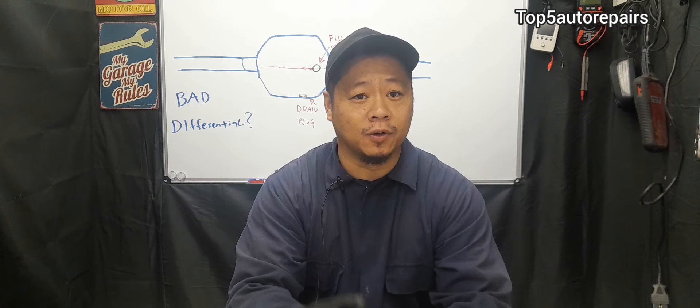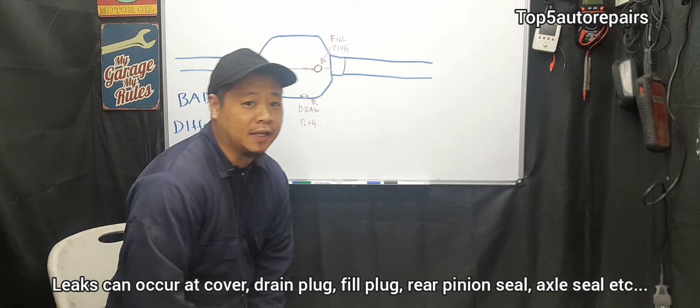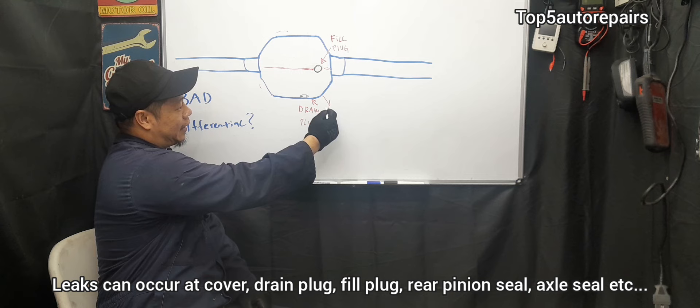The next common reason why your differential fails is going to be leaks. So basically, you have a gasket over here that goes all around here and it is going to start leaking right at the gasket. Once it starts to leak around the gasket, you are going to have severe oil leak.